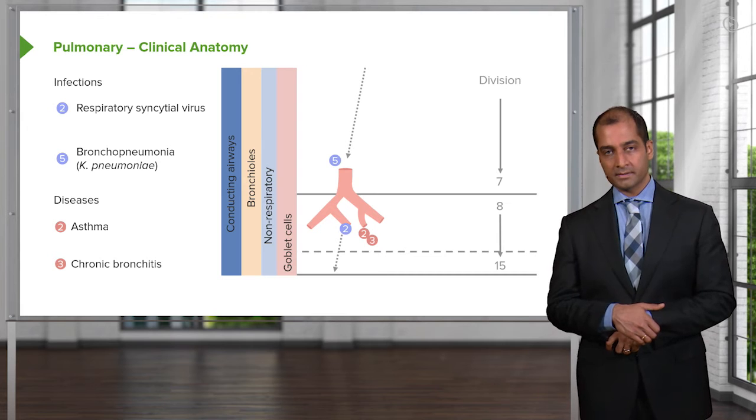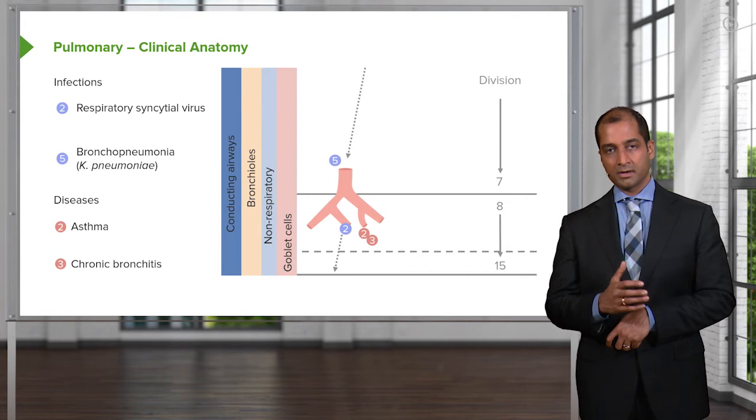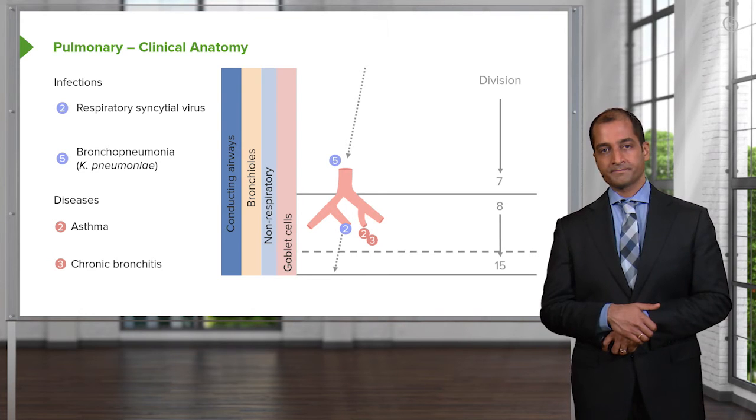There's bronchopneumonia, as we said, more distally. Bronchopneumonia, it's the fact that you have infection in the bronchi. Here, Klebsiella pneumoniae becomes our primary example.